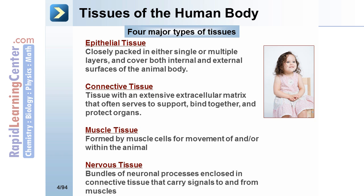Tissues of the human body — four major types. Epithelial tissue is closely packed in either single or multiple layers and covers both internal and external surfaces of the animal body. Connective tissue has an extensive extracellular matrix and often serves to support, bind together, and protect organs.